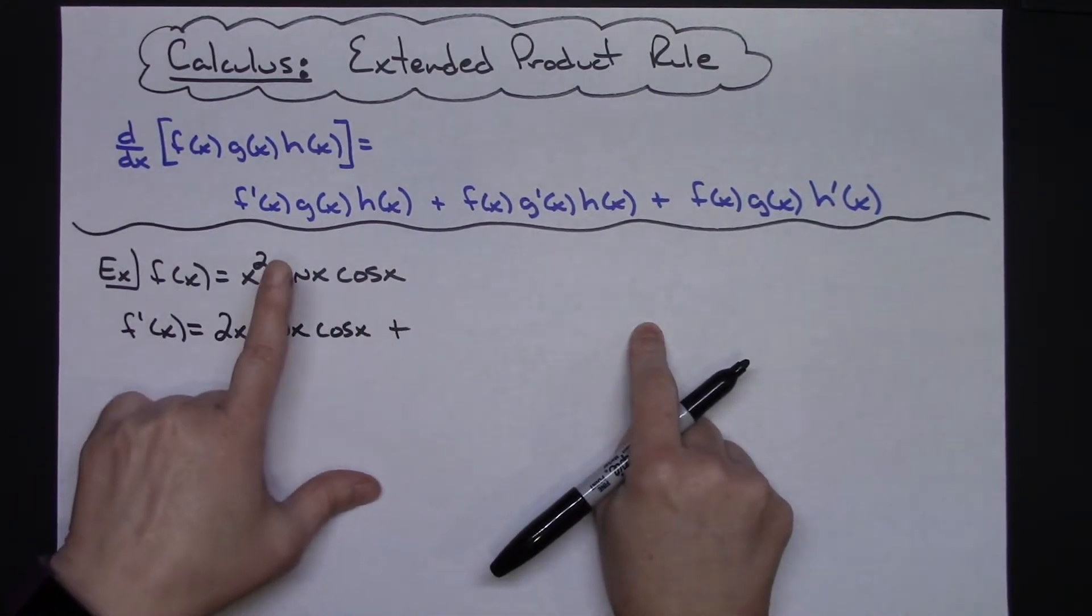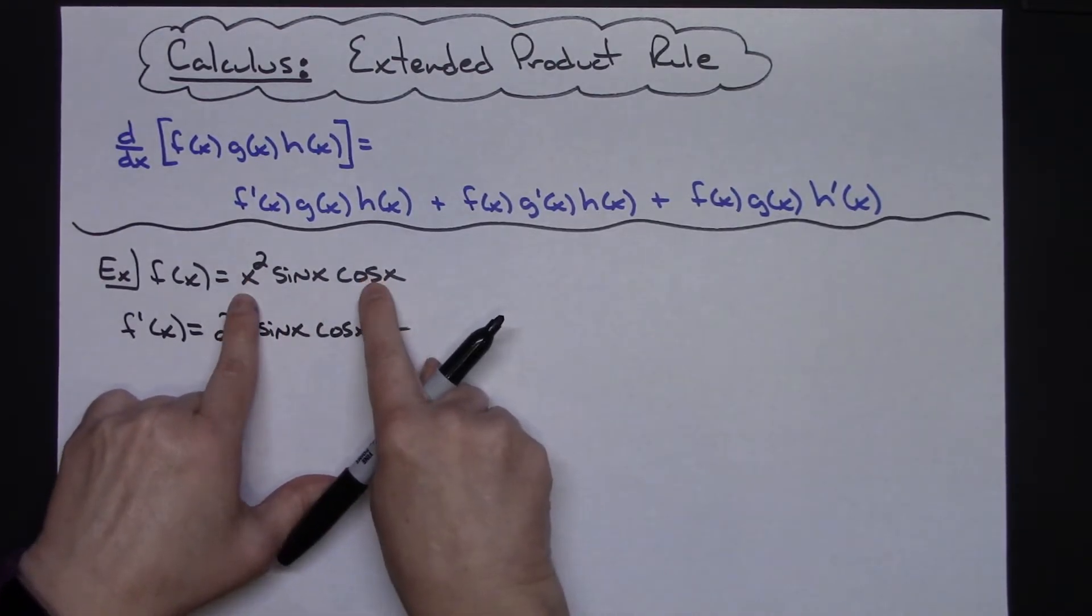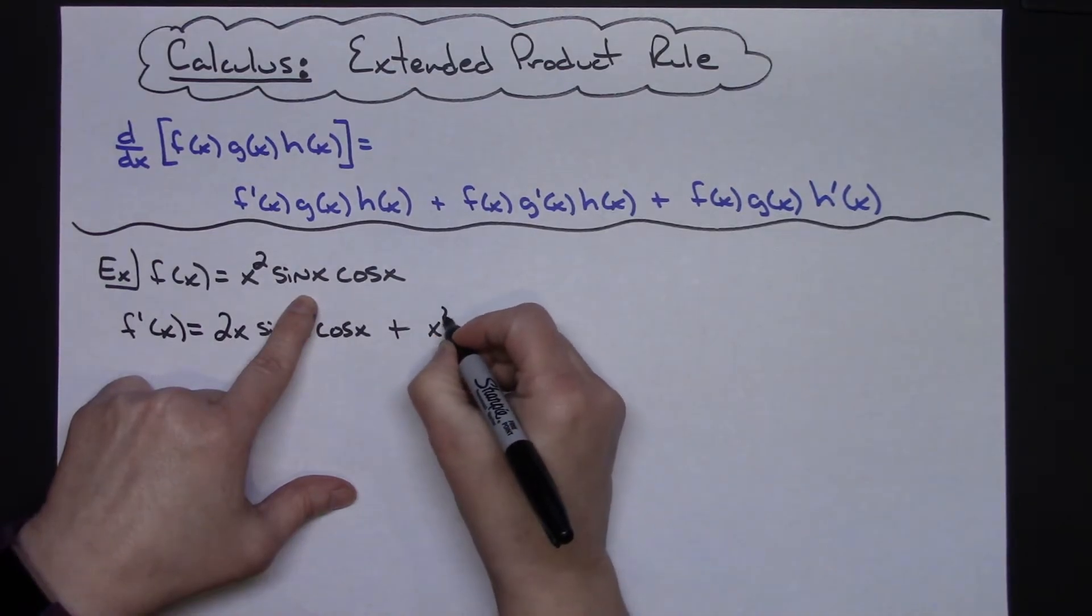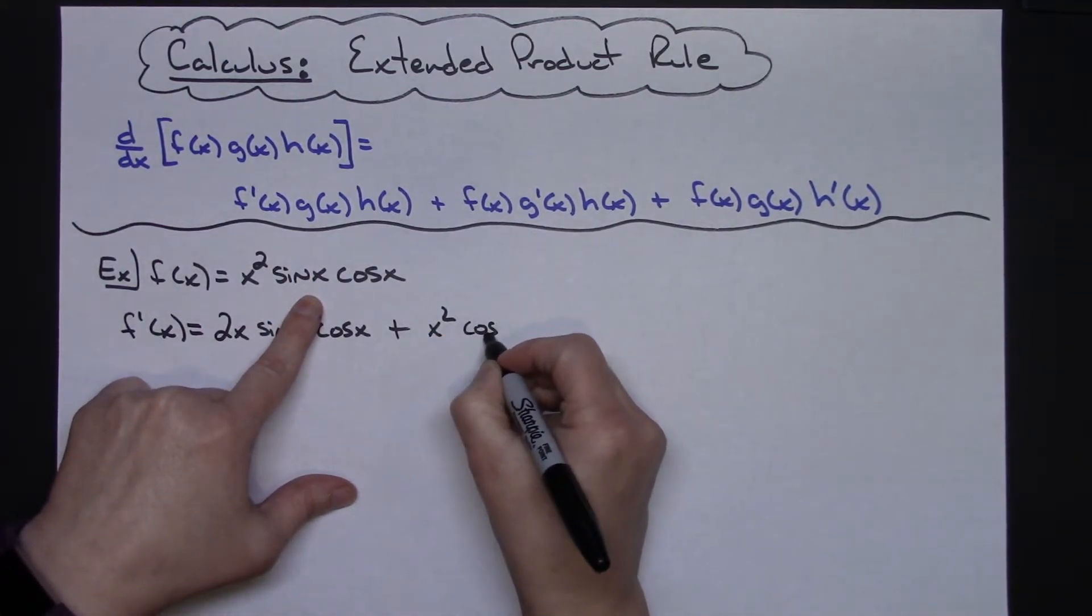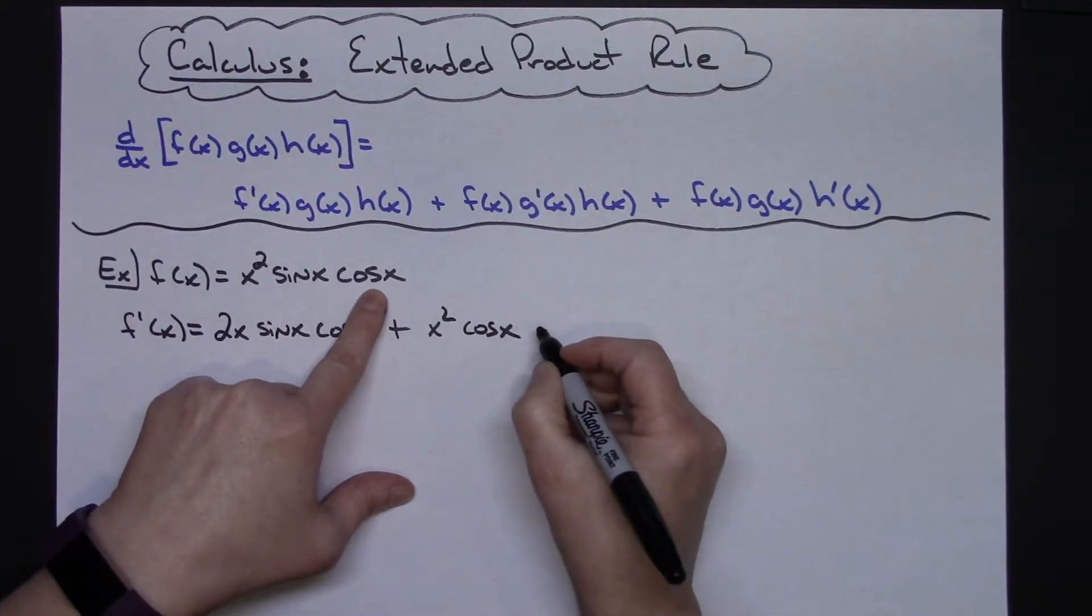In my middle product I'm going to take the derivative of my middle function, so the other two functions will stay the same. So I'll have the x², taking the derivative of sine I get cosine x, and then the last function stays the same, cosine x.